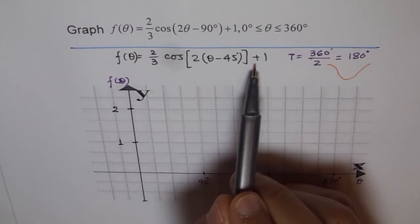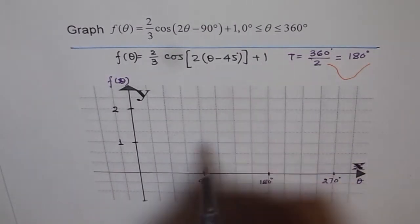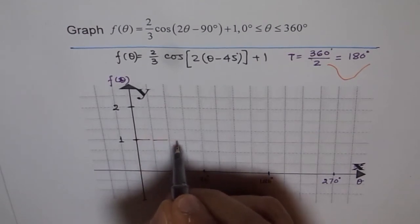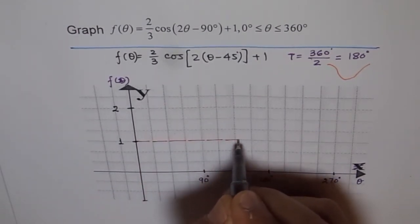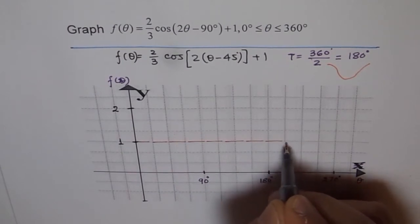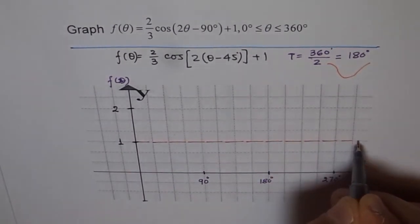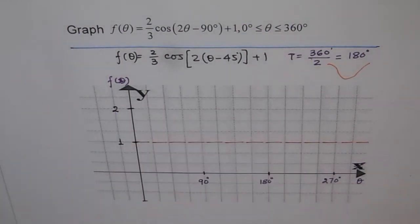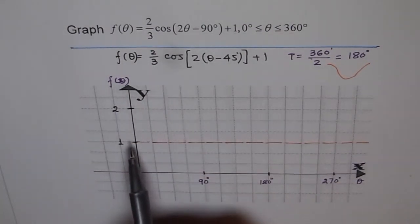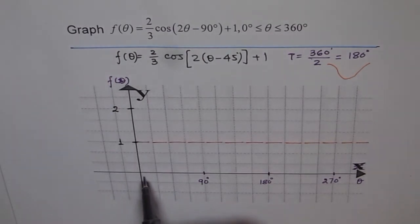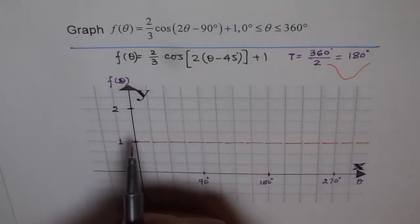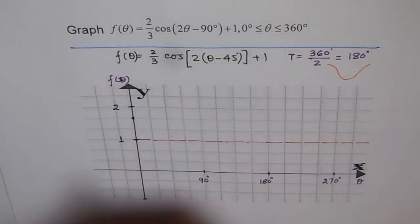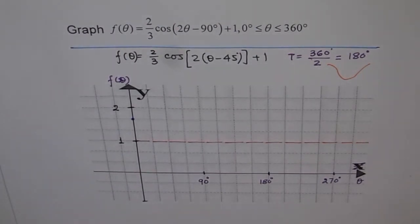The first thing we observe is axis of symmetry is at 1. Let's draw axis of symmetry. That is our axis of symmetry, so we'll start from here. Always this is the best place to start with. The second thing which we observe here is amplitude is 2 over 3. That means we'll go 2 over 3 above the graph and 2 over 3 below the graph. We know cosine function starts with the maximum. This is 1 third and that is 2 thirds. So that is our first point.